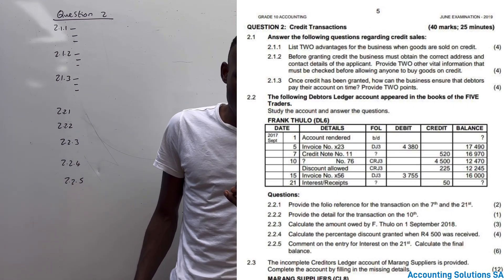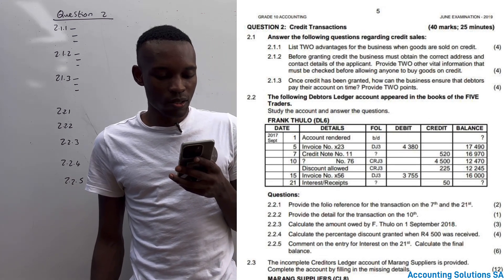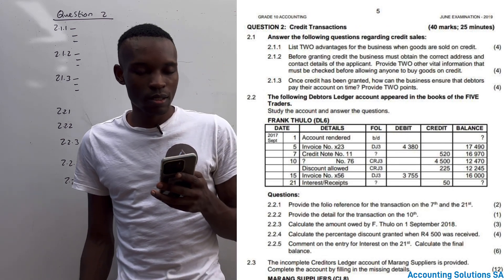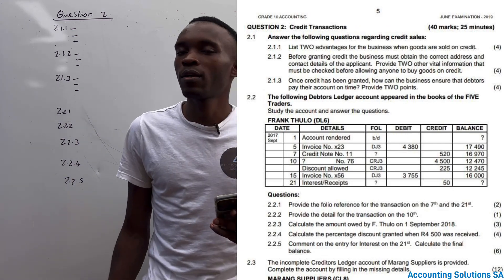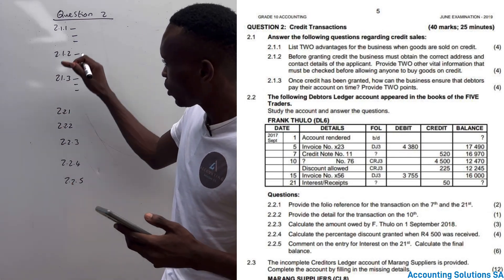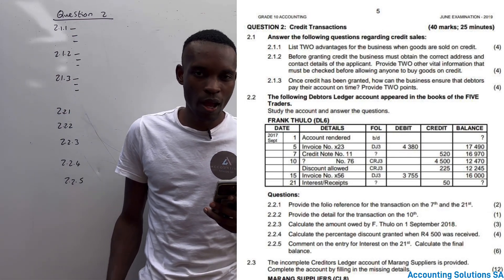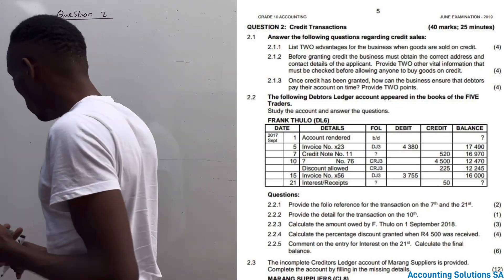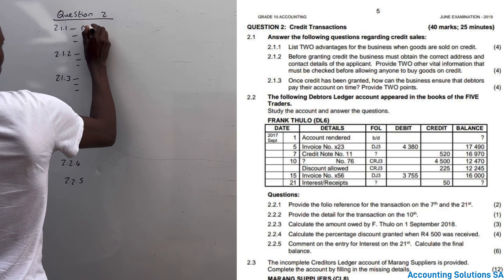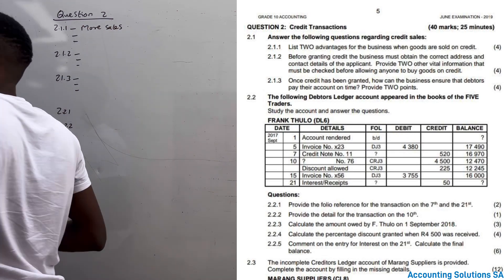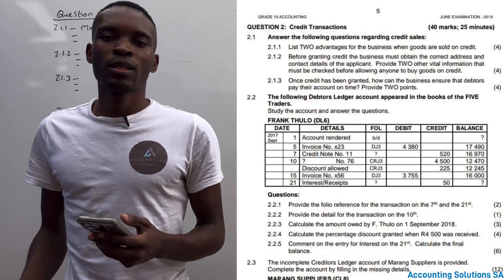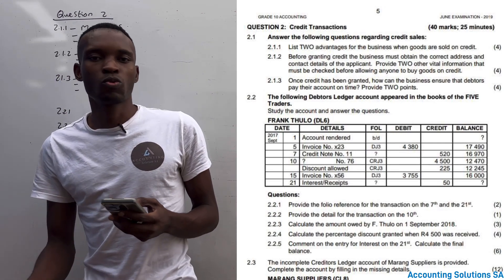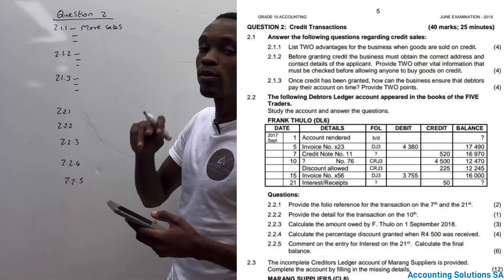Question 2.1.1: List two advantages to the business when goods are sold on credit. If you sell goods on credit, it's like you are selling a lot. Number one, of course, we are going to have more sales, because during the month some people don't have cash, so they can come and purchase goods on credit, which means our sales will be more.